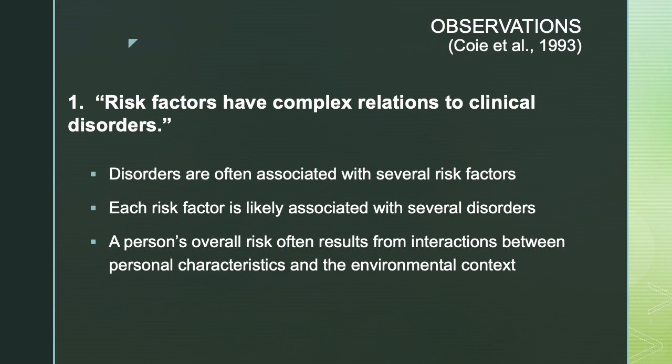For example, in the health field, heart disease has several risk factors: poor diet, lack of exercise, genetic risk — all of those things can confer risk for heart disease, and their interaction could confer greater risk. In addition, each risk factor is likely associated with several different disorders. This is where in prevention science you often have prevention strategies focused on what we call general or generic risk factors, because of their potential to derail several different trajectories of risk.